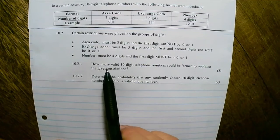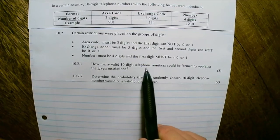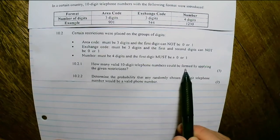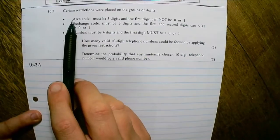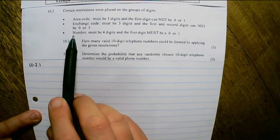The question asks: how many valid 10-digit telephone numbers could be formed by applying the given restrictions?